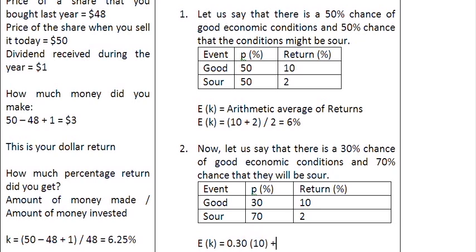Then we put a plus sign and we look into the second possibility, which is that there is a 70% chance that the economic condition might not be so good. So let us write down this probability here, 0.70. And let us multiply this probability by the return that is associated with it, that is 2%. So this here is going to give you, if you solve it, it is going to give you 4.4%.